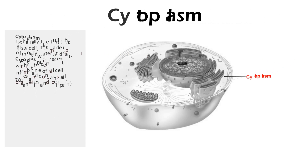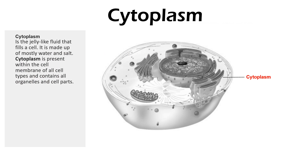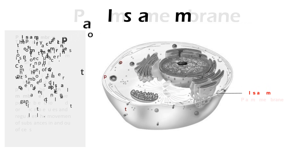Cytoplasm is a jelly-like fluid that fills the cell. It is made up of mostly water and salts. Cytoplasm is present within the cell membrane of all cell types and contains all organelles within the cell.